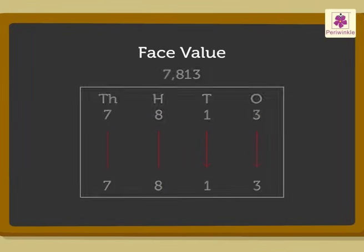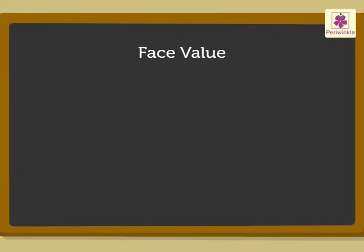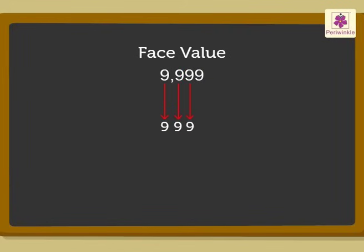Now, let us solve one more example. Look at the number 9999. The face value of each digit 9 is 9, regardless of its position in the number.